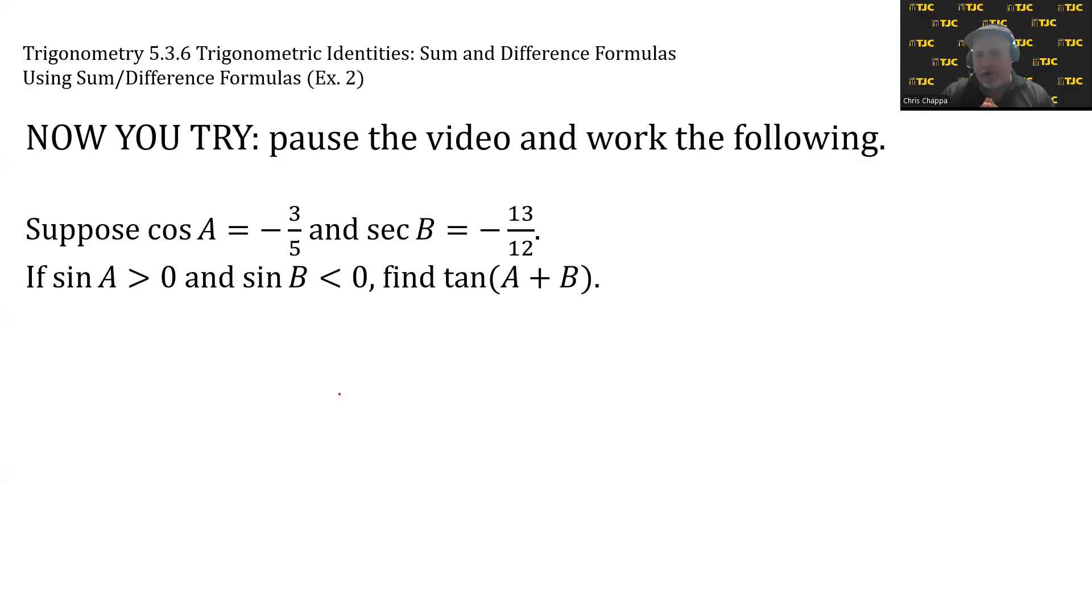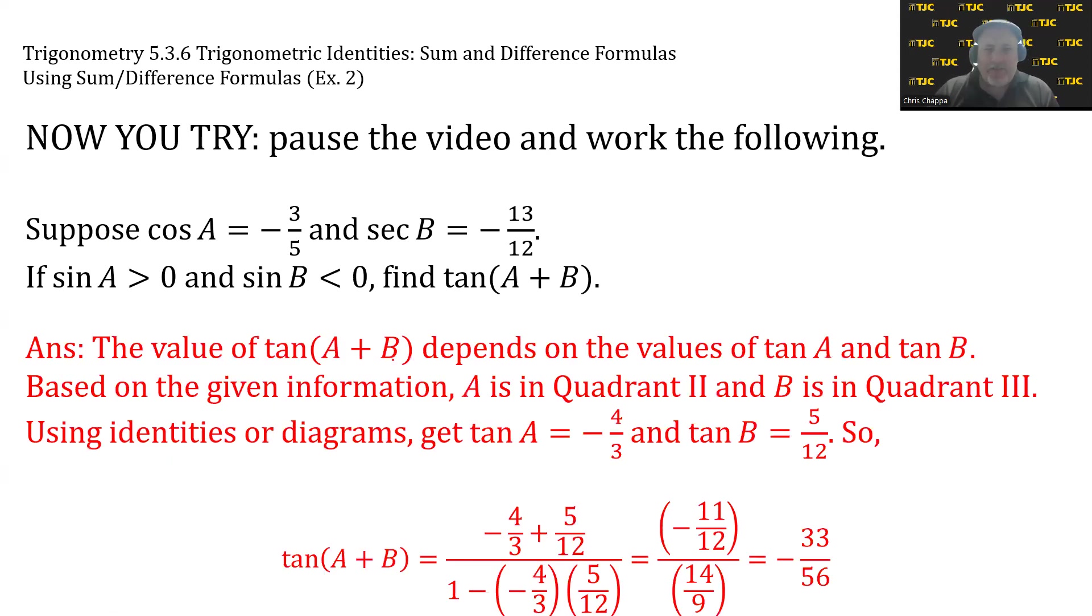Spoiler alert, if you haven't paused the video, here come the solutions. The value of tan(A + B) depends on the values of tan A and tan B. Based on the given information, A is in quadrant 2 and B is in quadrant 3. Using identities or diagrams, get tan A = -4/3 and tan B = 5/12. So tan(A + B) equals the sum of the tangents over 1 minus the product of the tangents, which equals -33/56. The way things have been going this morning, it would not surprise me if there was an error, so if you suspect the answer is different, please let me know.